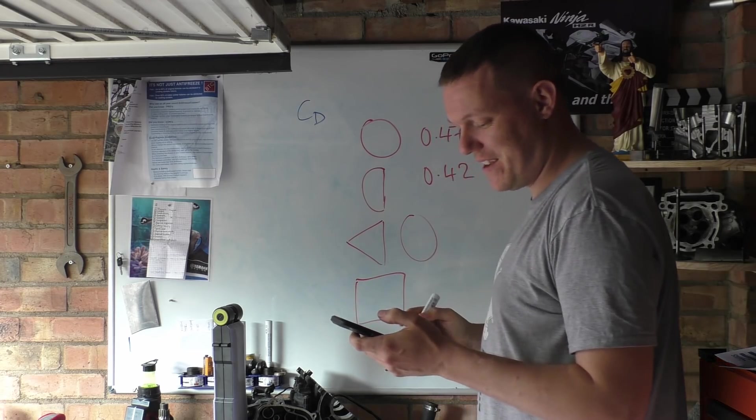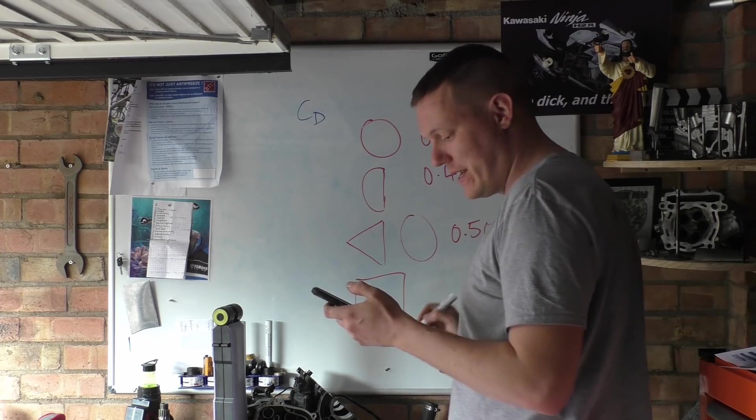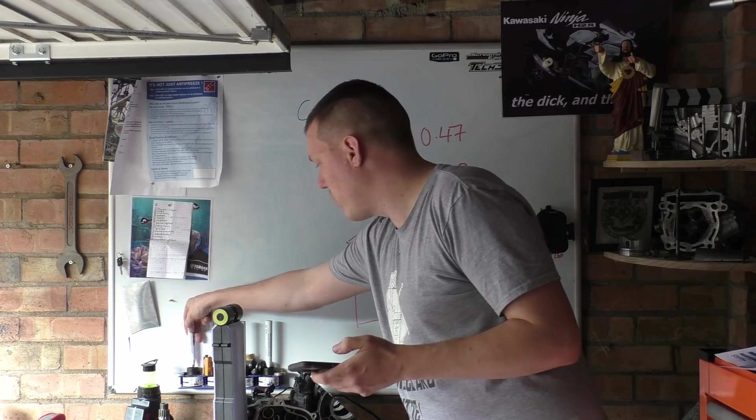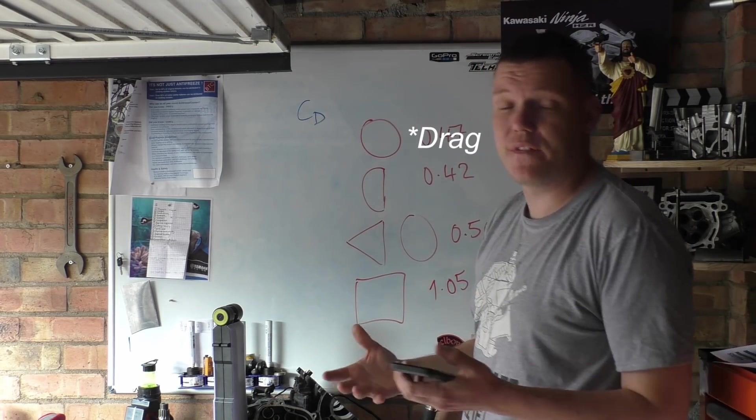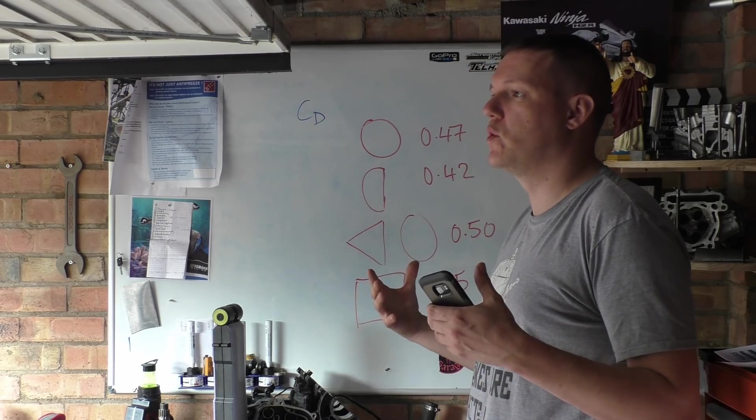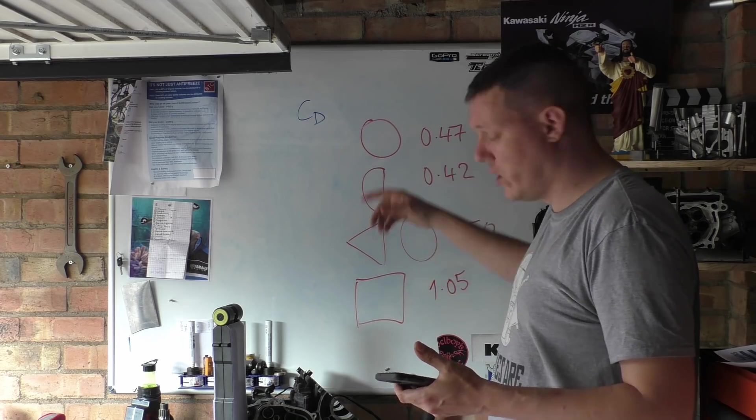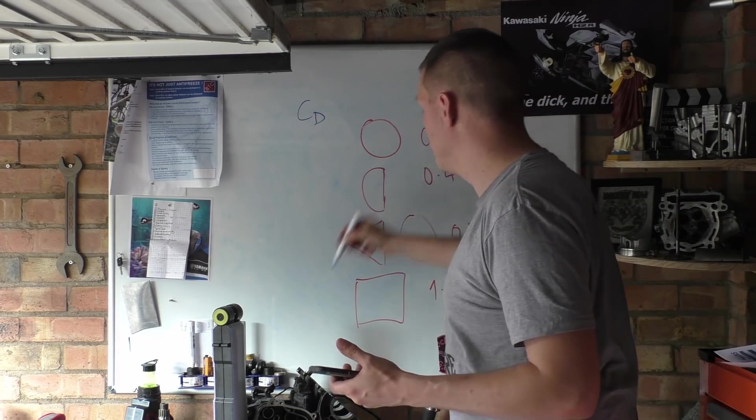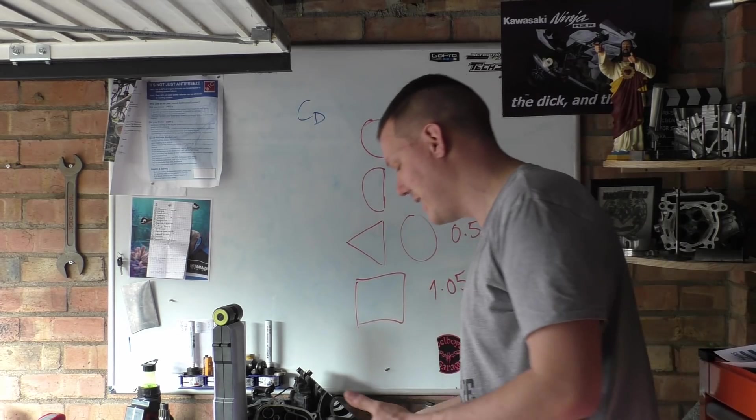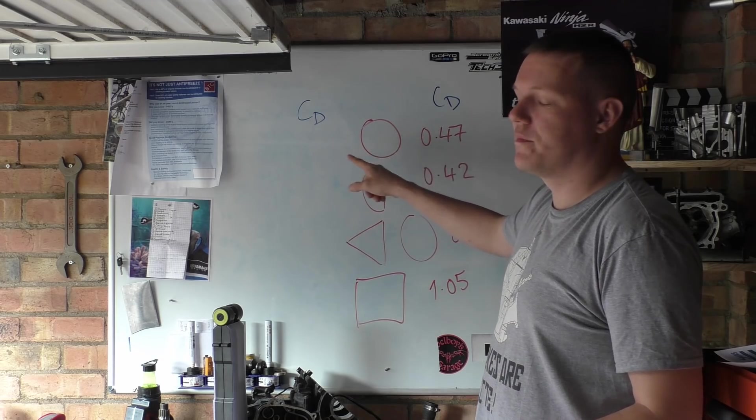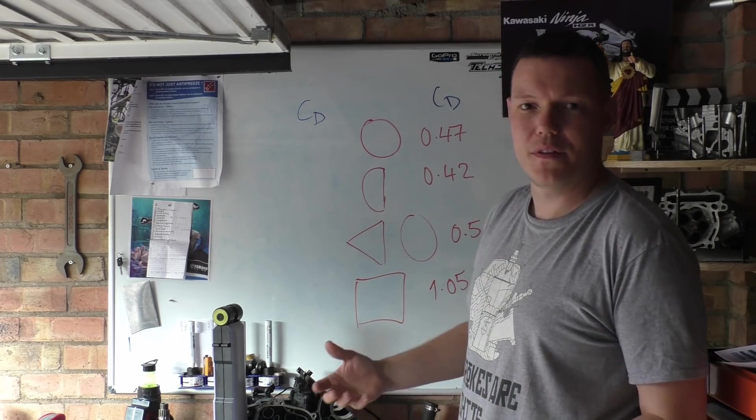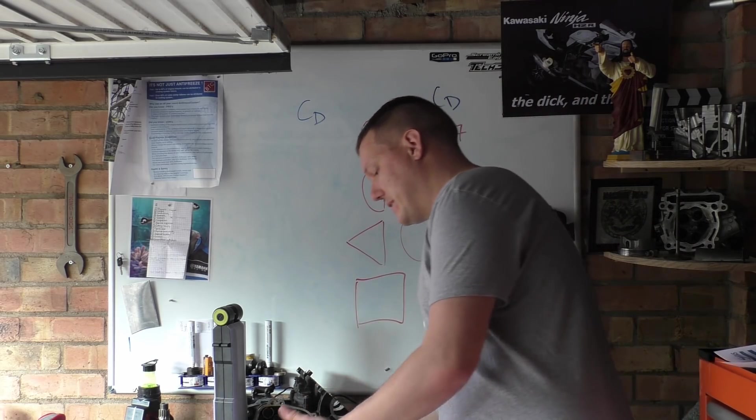These coefficient of drag numbers are coefficients, which means they are dimensionless arbitrary numbers that we apply to something to make it comparable between other things. What you'll notice is all these coefficient of drag numbers don't mention anything about size, and that's the problem. There's no mention of how big these things are. The drag of a ball that is six millimeters is obviously not the same as a ball that's a mile across.